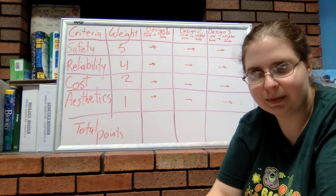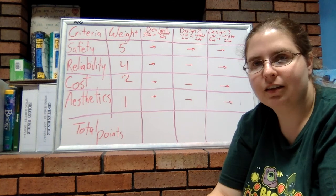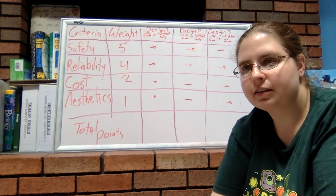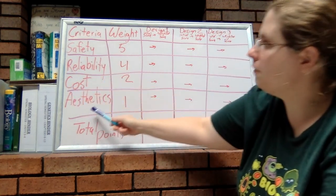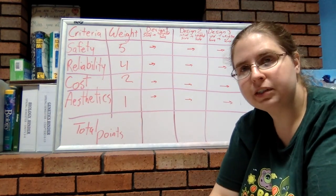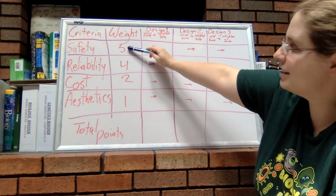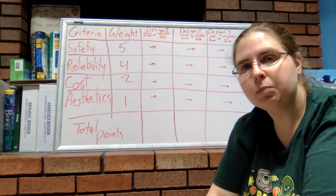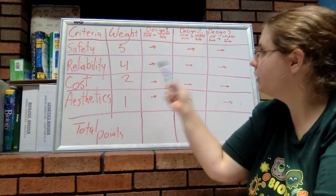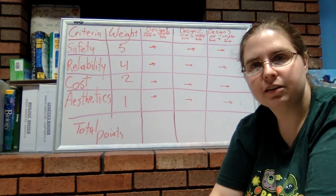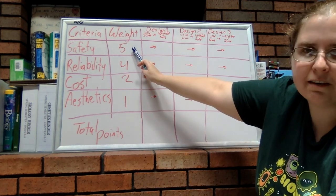Now I also assigned them weights. The weight simply means they're important to me. Although all four of these criteria are important to me, some of them I feel are more important than others. For instance, safety should be the most important factor in deciding which of these designs would be the best solution, so I gave it a higher weight of five.